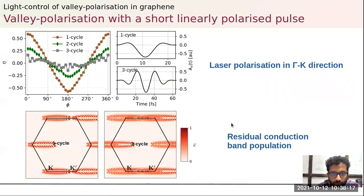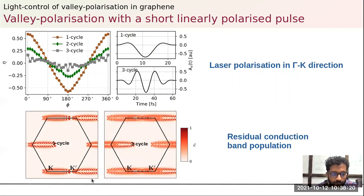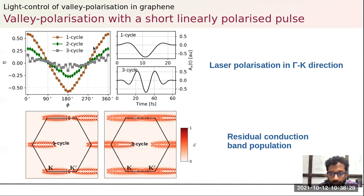We have also tried short linearly polarized fields directed along the K to K-prime or K-prime to K direction, and the valley polarization can be controlled by changing the carrier-envelope phase of the pulse.